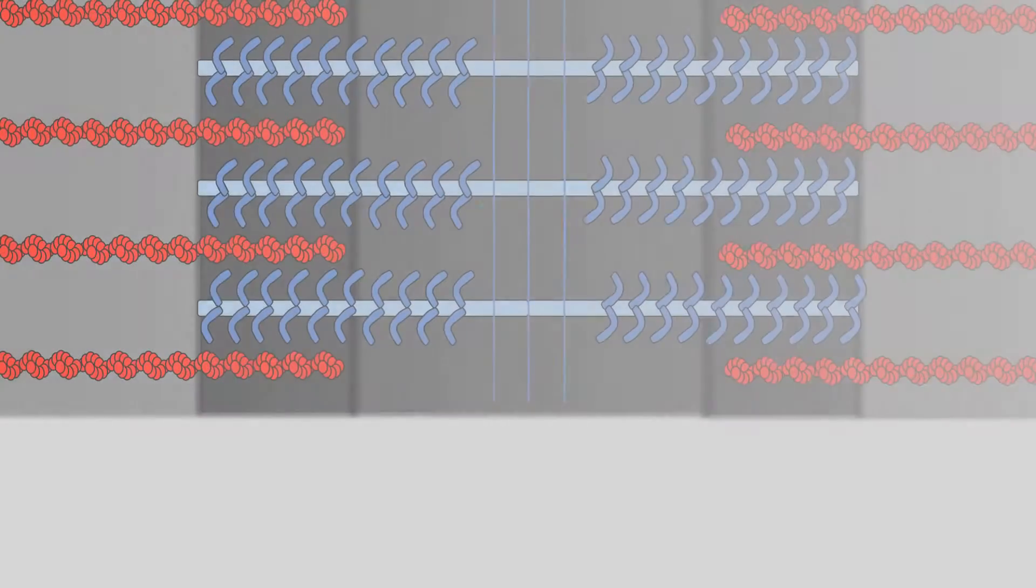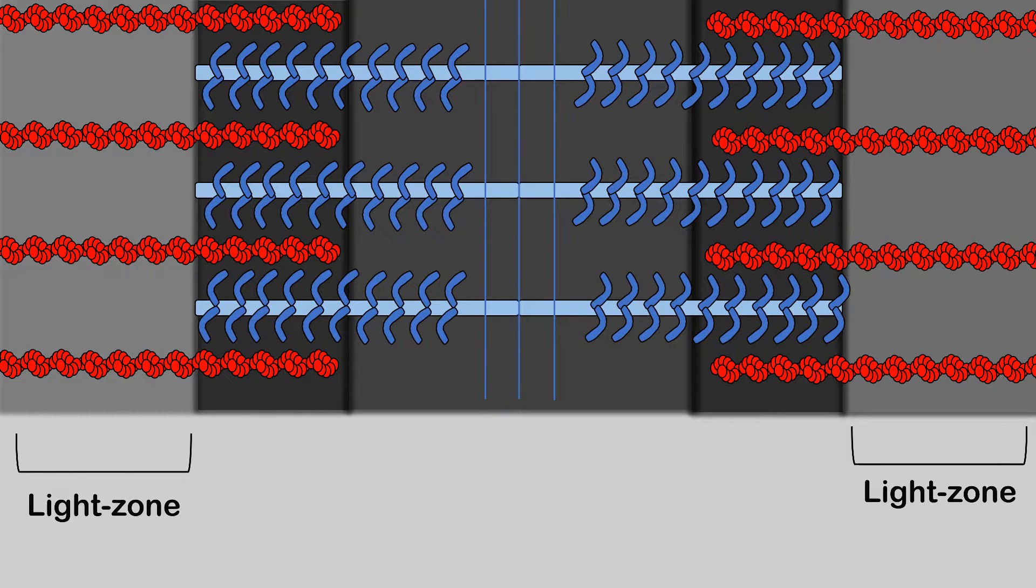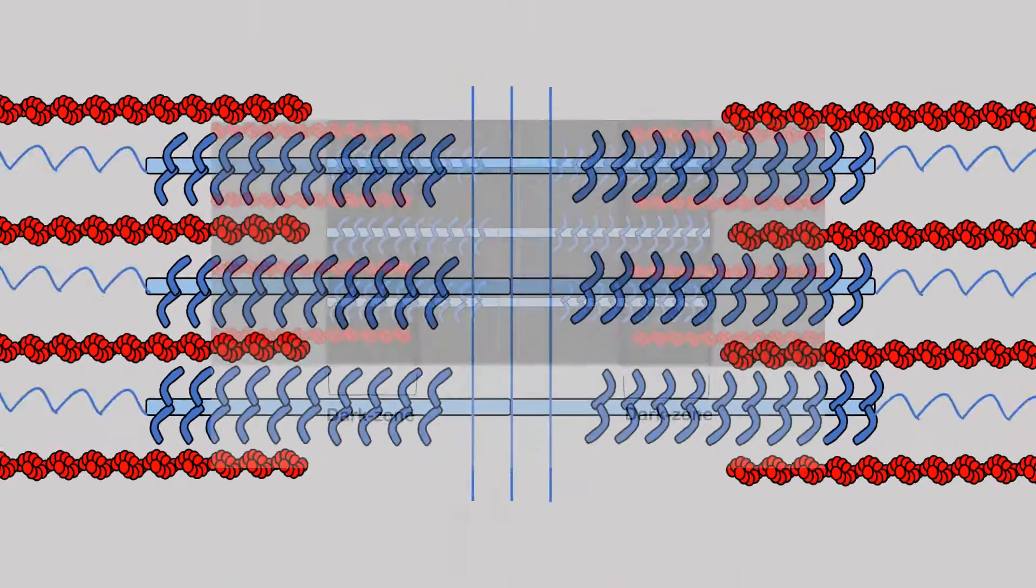So another name for the light zone is called the I-band, and this simply refers to the same thing where actin is by itself and not overlapping myosin. And again, we have the dark zone where both actin and myosin overlap.